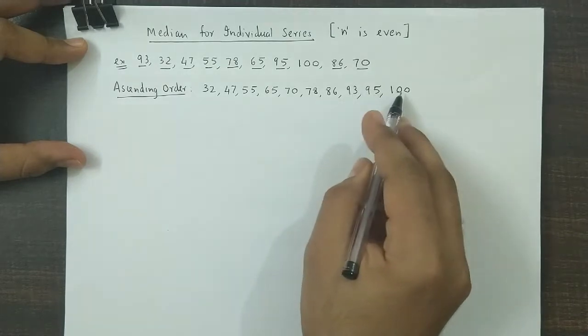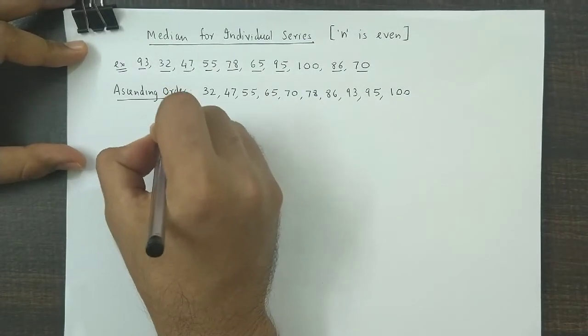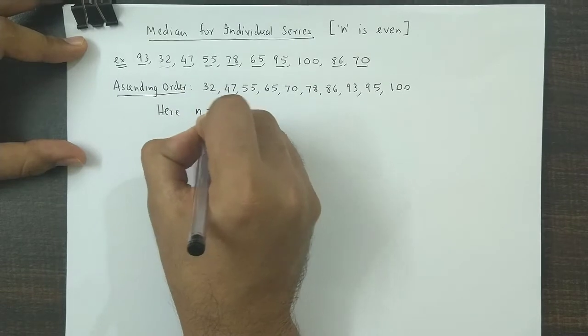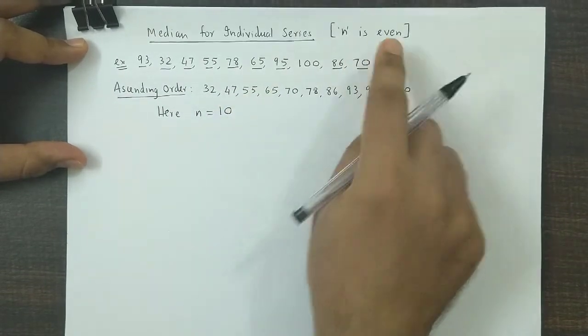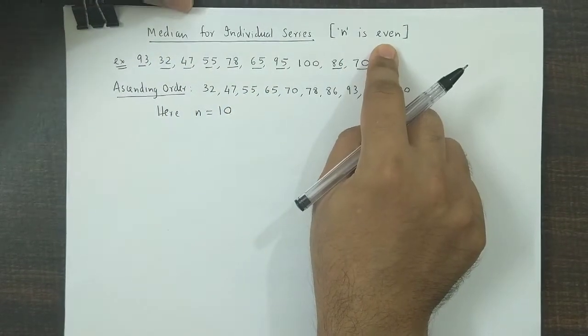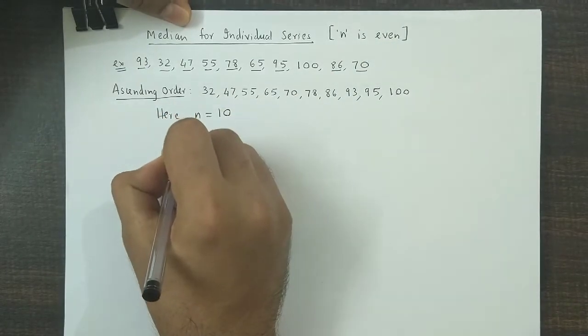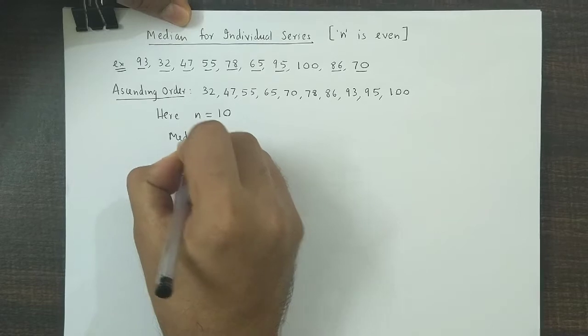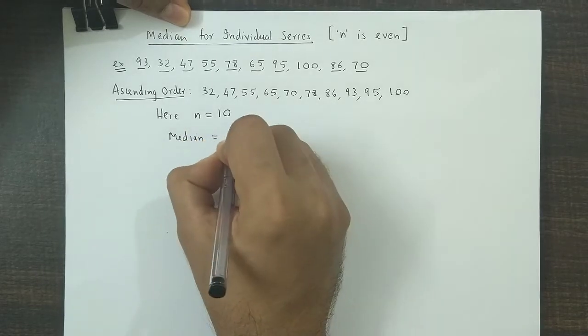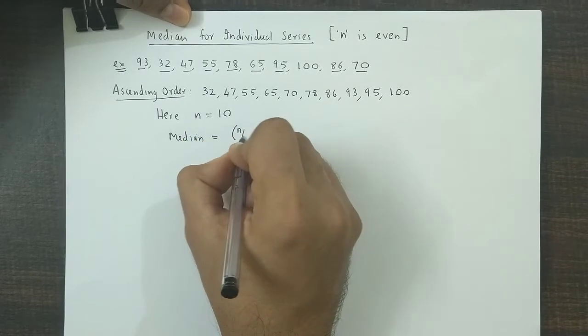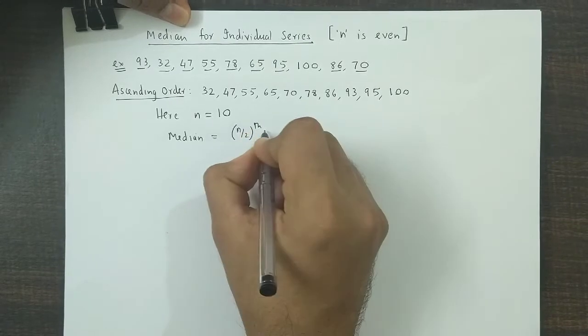So we have one, two, three, four, five, six, seven, eight, nine, ten. So number of observations here, that is n, is equal to 10, which is even. Now when number of observations is even, median is calculated as median equals the average of n by two observation